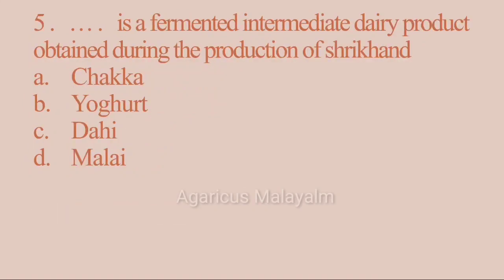Fifth question: Dash is a fermented intermediate dairy product obtained during the production of Shrikant. Answer options: Option A, Chakka; Option B, Yogurt; Option C, Dahi; Option D, Malayu. Correct answer: Option A, Chakka.